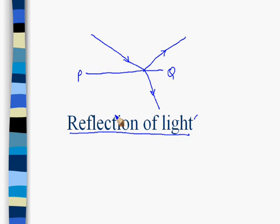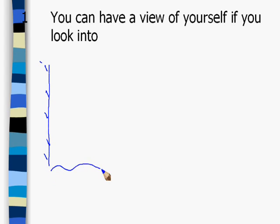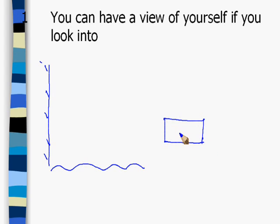And that is our today's topic. You can have a view of yourself if you look into an obvious mirror. You all have a looking mirror in your house, as well as in the water level in some pond or in a window glass — you can see how you are looking.